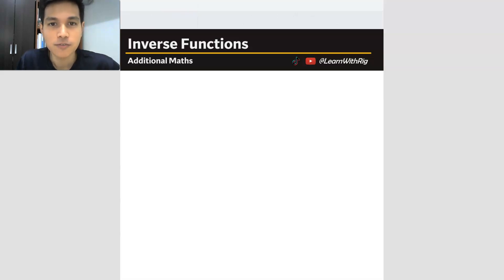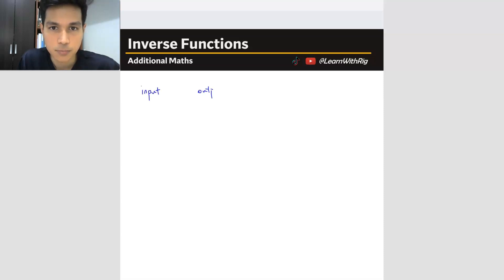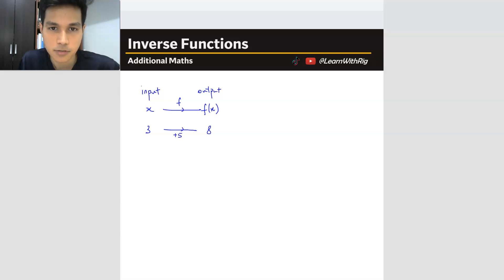So inverse function. On our previous video, we talked about the basics of functions — I'll just call it forward function. So in the previous video, we talked about forward function where there is an input and there is an output. The input is x and the output is f(x), and the function relates the input to the output. So if I got 3 here and 8 here, the relationship is the function — 3 plus 5 gives me 8.